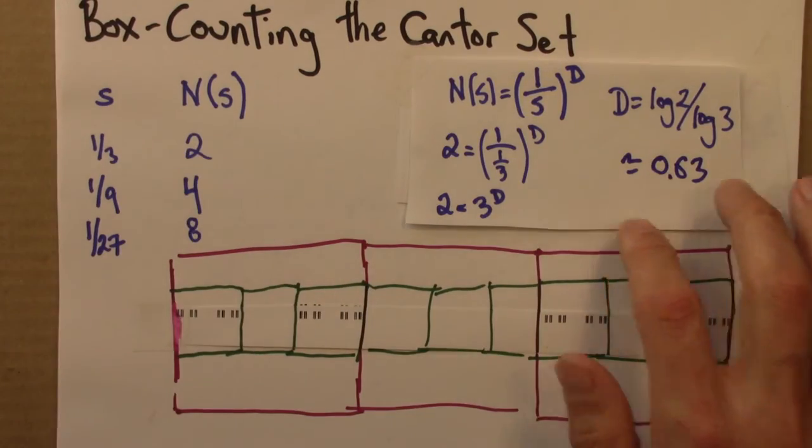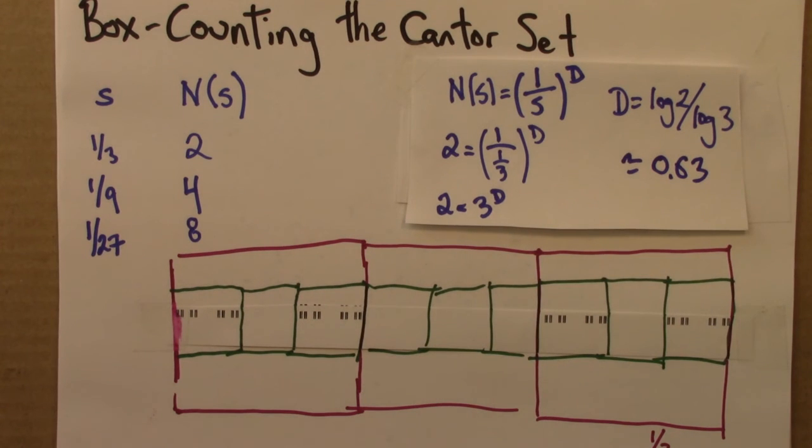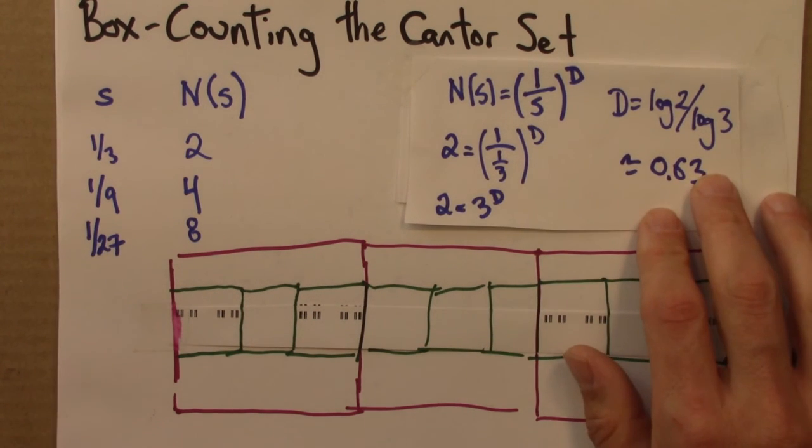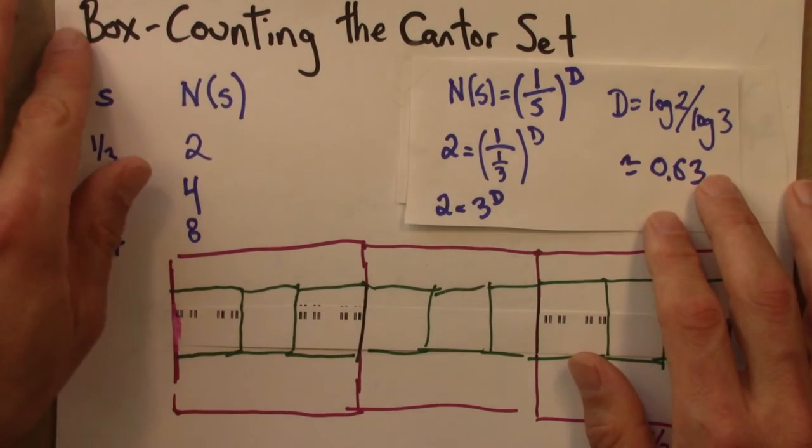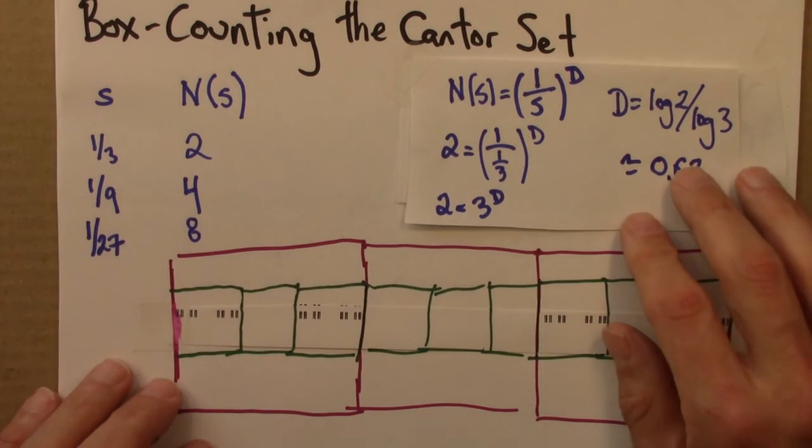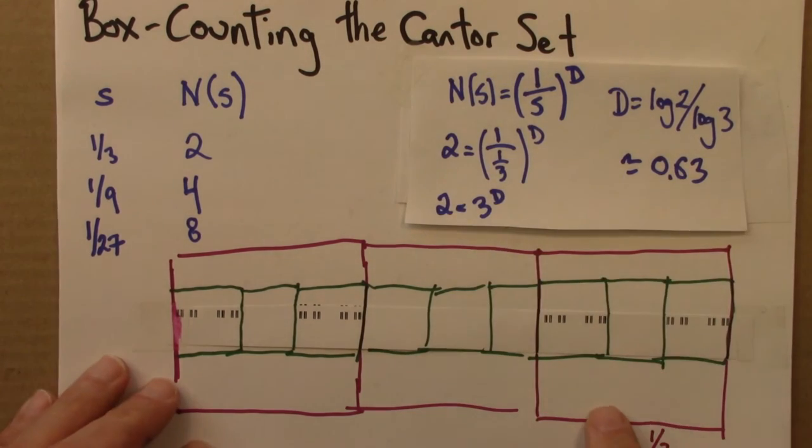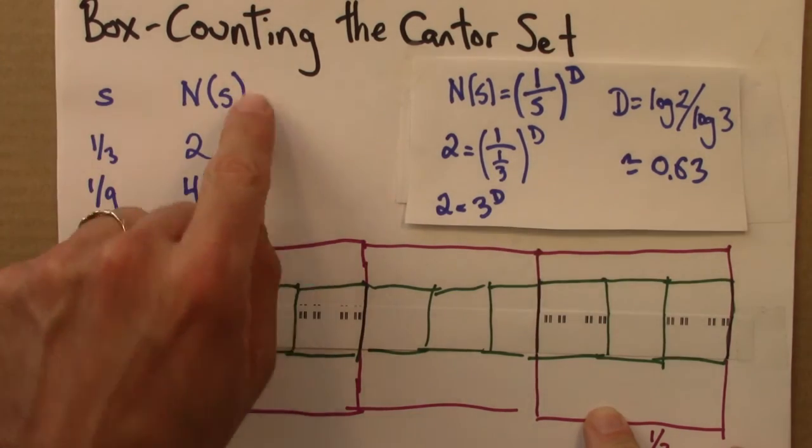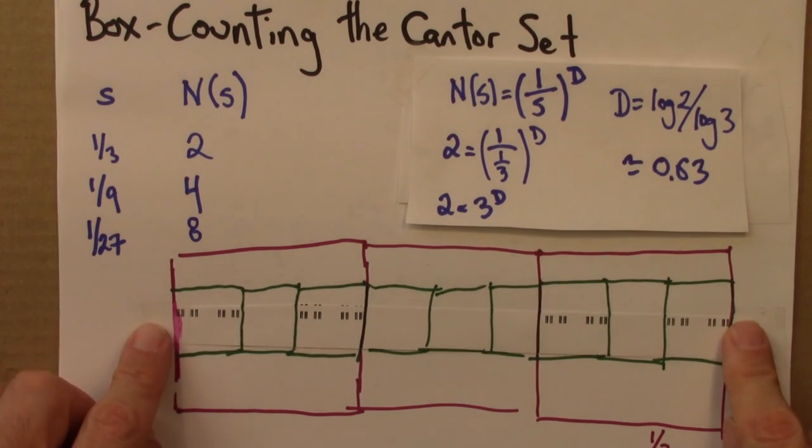So that's the same thing we found for the self-similarity dimension. And that's not a surprise. The box counting and self-similarity dimensions, when they both can be applied, will give the same answer. So that's one more example of using the box counting dimension for a regular fractal.